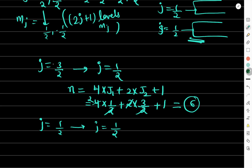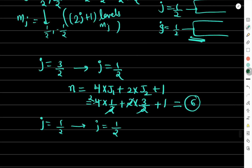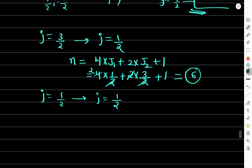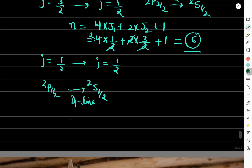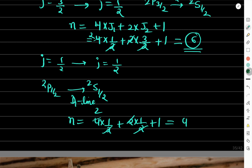The transition 2P₃/₂ to 2S₁/₂ is the D2 line, giving 6 transitions. The transition 2P₁/₂ to 2S₁/₂ is the D1 line, giving 4 transitions. For D1: N = 4×(1/2) + 2×(1/2) + 1 = 2 + 1 + 1 = 4. Total spectral lines = 6 + 4 = 10.